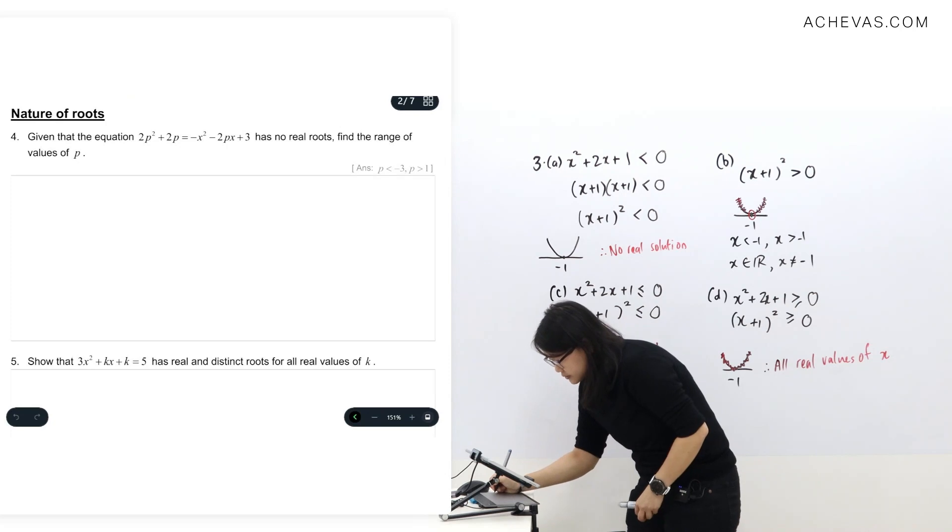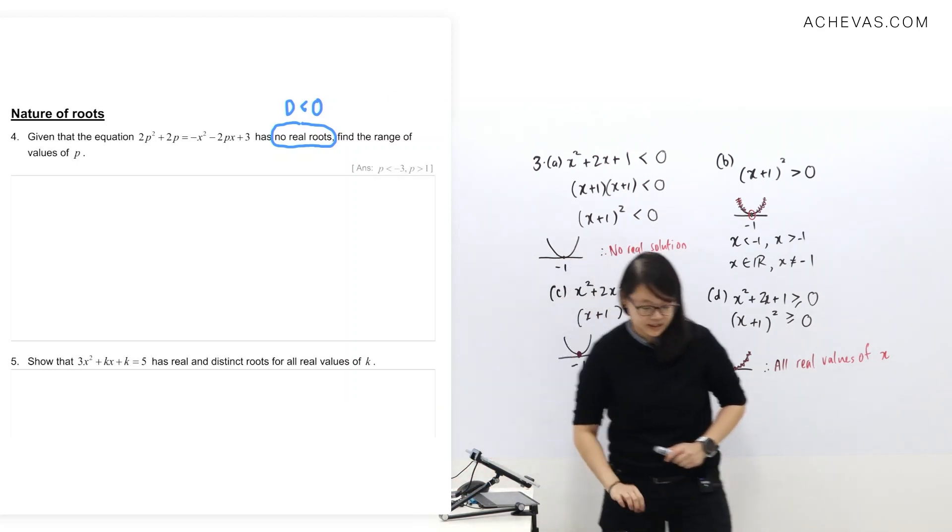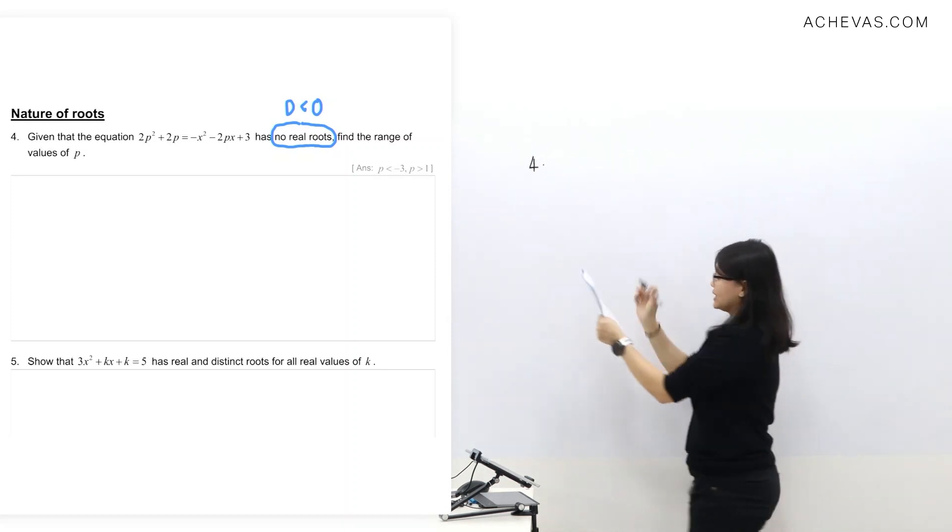This keyword here tells us what we're going to do. We know that we are going to do discriminant less than zero, which means you need to pick your a, b, c out. Let's just erase this part. I'm going to write down the question.